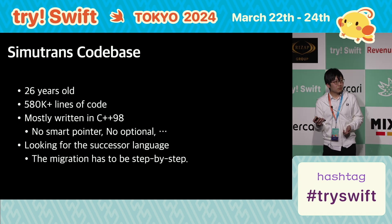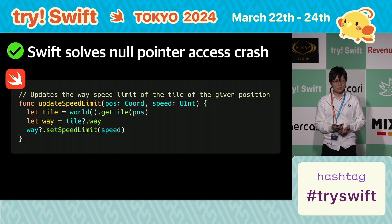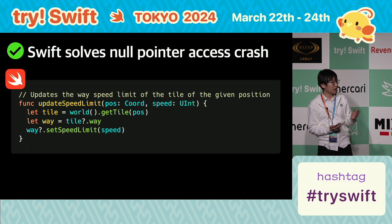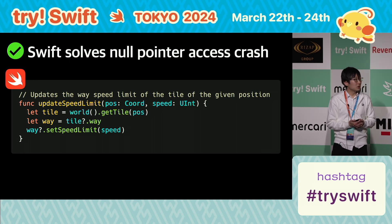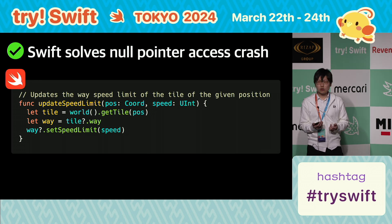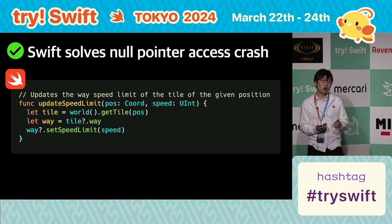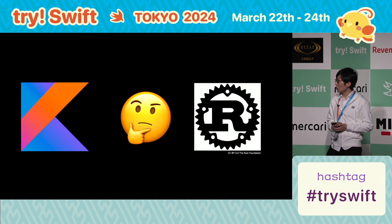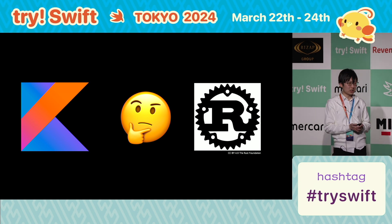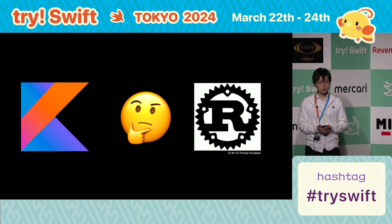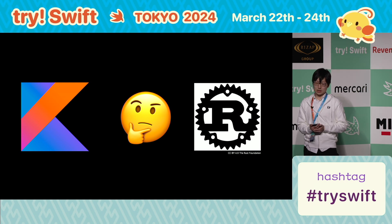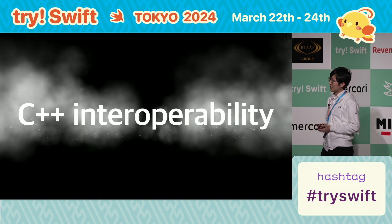The answer is Swift, of course. As you know, Swift has a perfect solution for null pointer access: optional chaining. The Swift compiler ensures the validation, and we no longer suffer from this kind of crash. Simply using Swift will solve the null pointer access issue. However, this kind of type safety is also offered by other languages like Kotlin and Rust. So, what makes Swift the best candidate for modernizing C++? The answer is C++ interoperability.